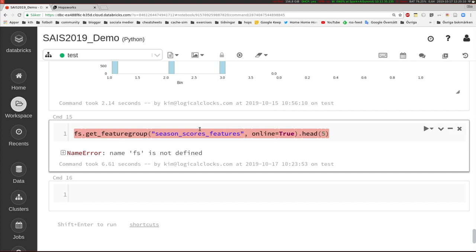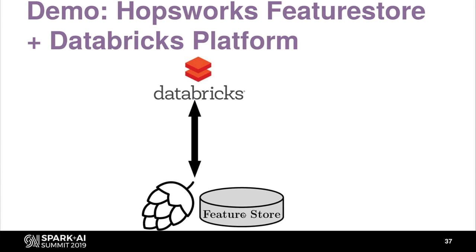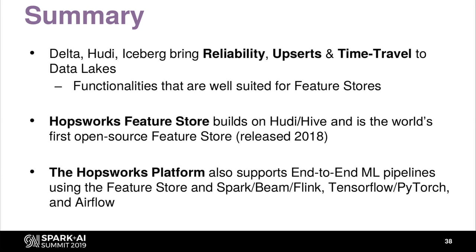Machine learning right now is disrupting every aspect of our industry — it's an extremely powerful tool. But it also comes with quite high complexity and technical debt. Our solution for managing this complexity is to invest in a data management layer specifically designed for machine learning called a feature store. In this presentation, I've argued that a feature store can benefit a lot from being built on technologies like Databricks Delta, Apache Hoodie, and Apache Iceberg. The world's first open source feature store since 2018 is available on our platform — on cloud or on-prem, everything is open source. Please have a look on GitHub, or if you want enterprise support, let me know and we can set something up. Thank you very much for listening, and now I'm open for questions.